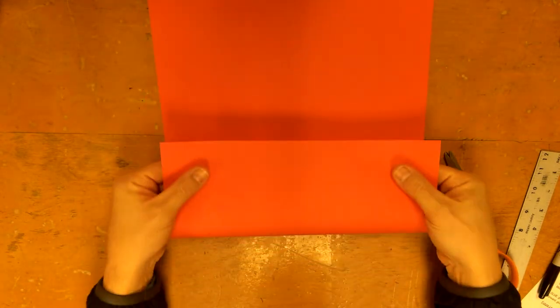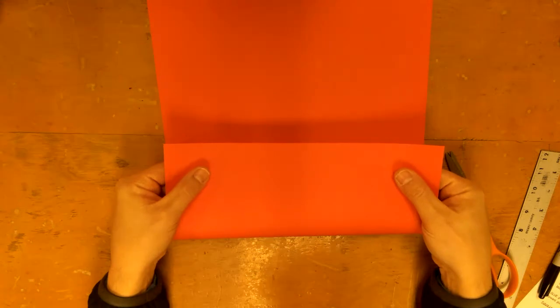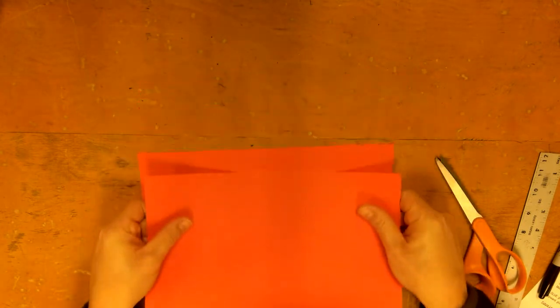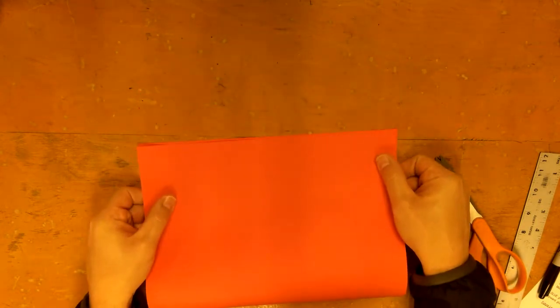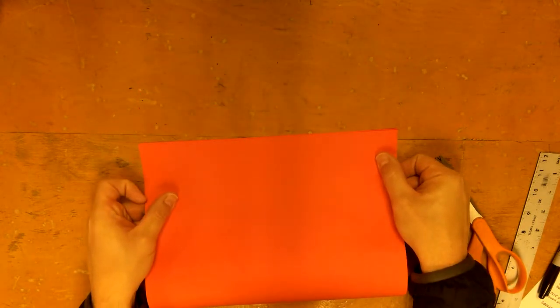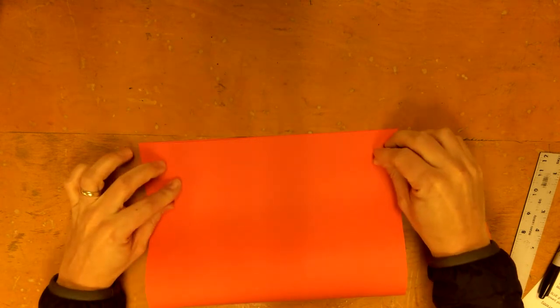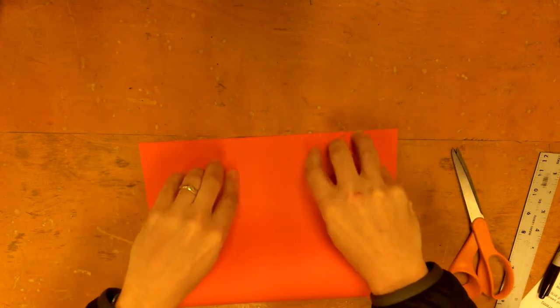You have your paper the tall way in front of you and I grab it with my thumbs on the bottom and my other fingers on top. What I'm going to do is bring it up and now I match the corners up on top and the bottom.